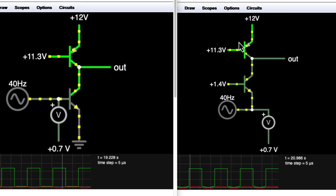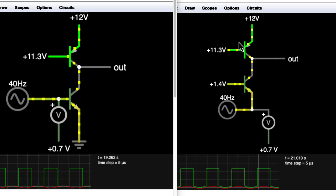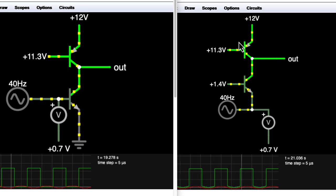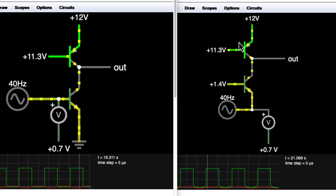Hi there. My name is Aaron Lanterman. I'm a professor of electrical and computer engineering at Georgia Tech, and I've been exploring active loading techniques for BJT amplifier design.